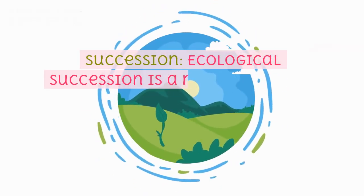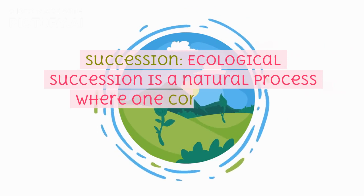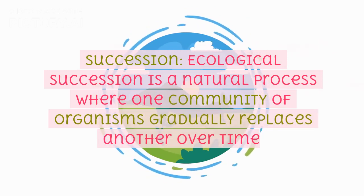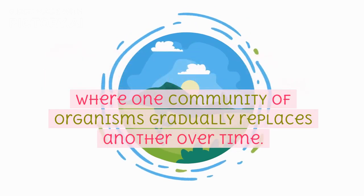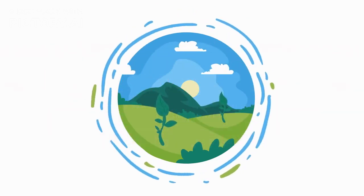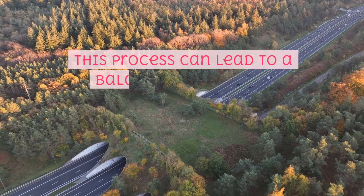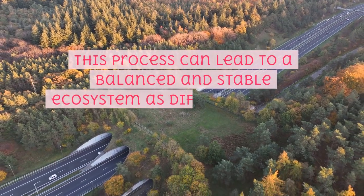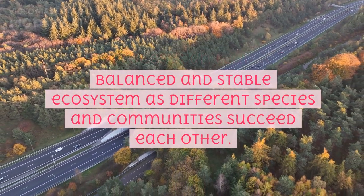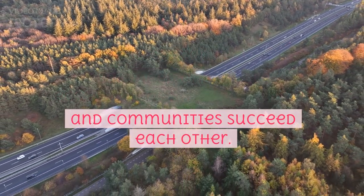Succession. Ecological succession is a natural process where one community of organisms gradually replaces another over time. This process can lead to a balanced and stable ecosystem as different species and communities succeed each other.